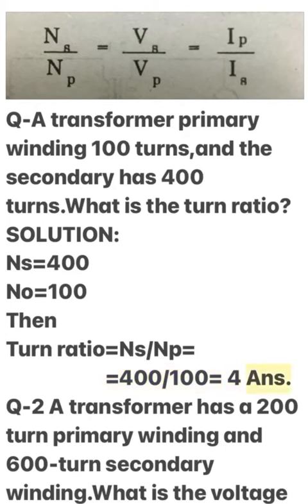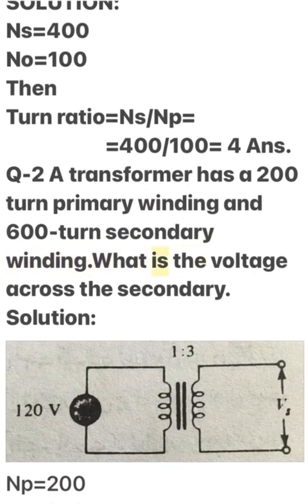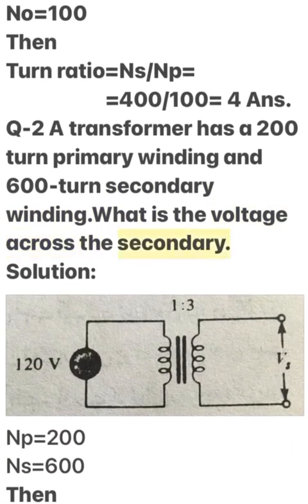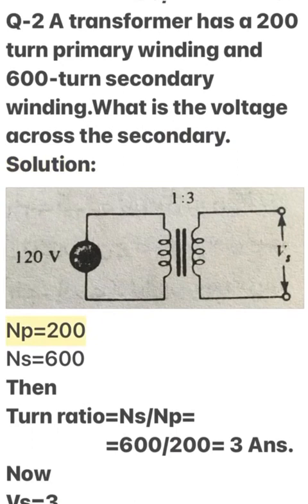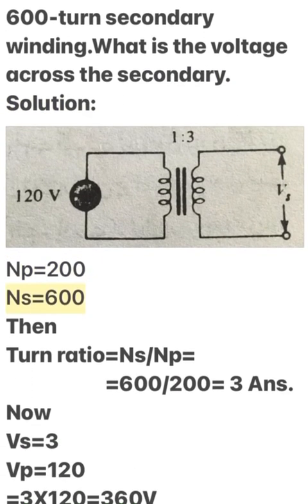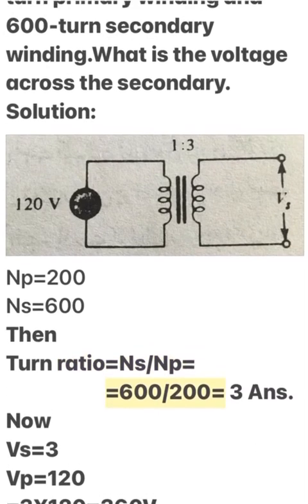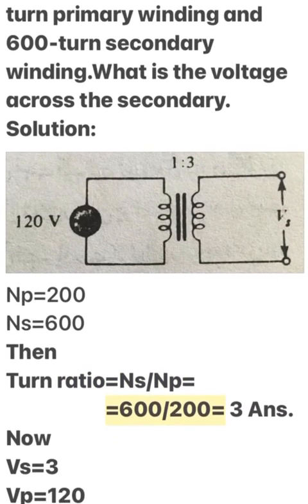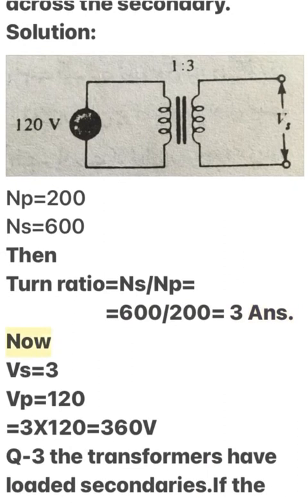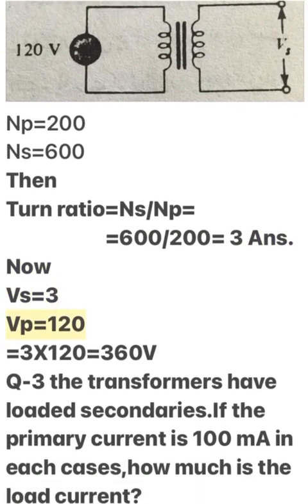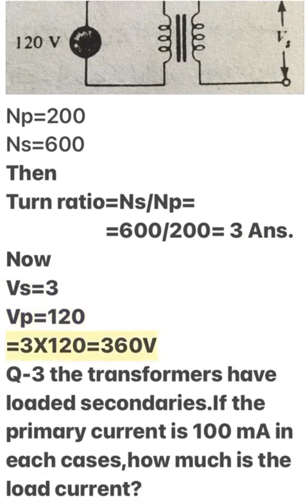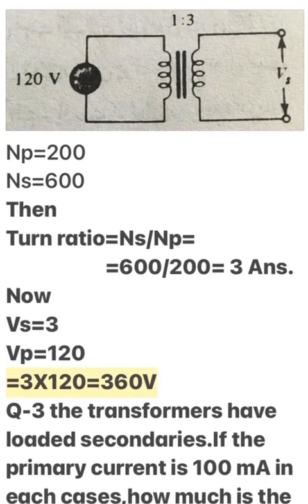Q2: A transformer has a 200-turn primary winding and a 600-turn secondary winding. What is the voltage across the secondary? Solution: Np = 200, Ns = 600. Turn ratio = Ns / Np = 600 / 200 = 3. Therefore Vs = 3 × Vp = 3 × 120 = 360 V.